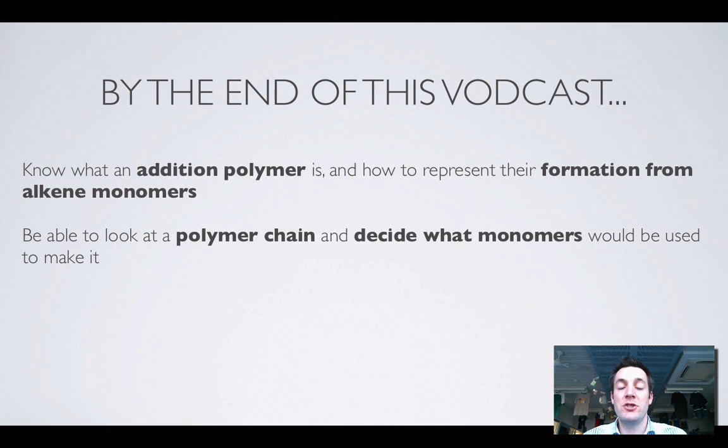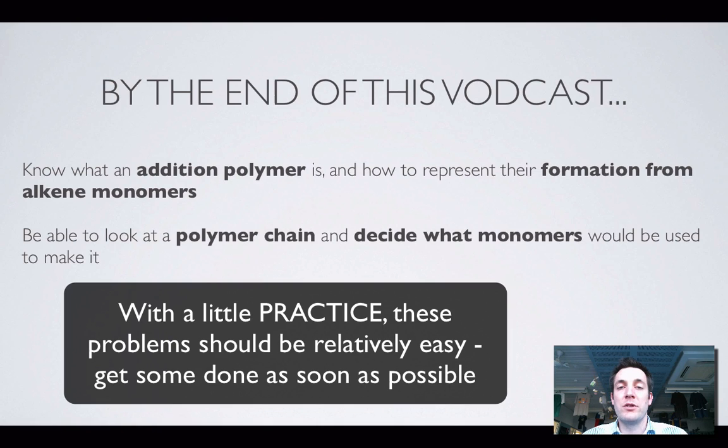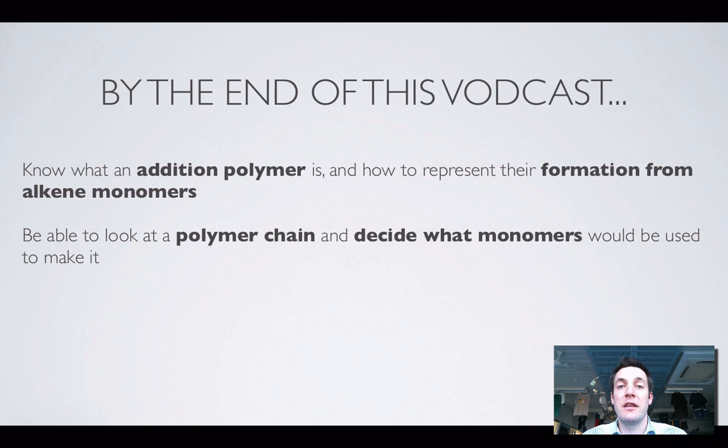So our aim at the start of this film was to understand what an addition polymer is and how to represent the formation of one from alkene monomers. Hopefully that's clear now. And hopefully you can also see how you can look at a polymer chain and decide what monomers we must have used or what monomers we must have joined together in order to make that polymer. As usual, if there's any questions or any areas that you find a little bit confusing, come and find me or post a comment on YouTube and I'll do my very best to help answer those questions.